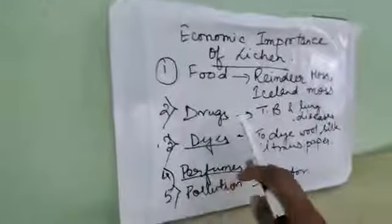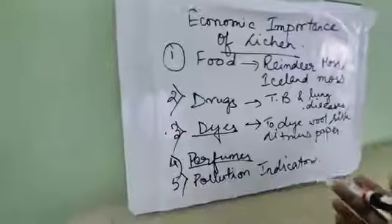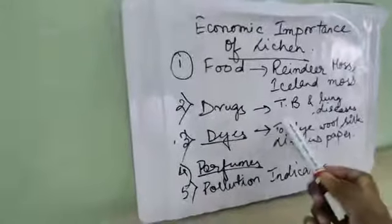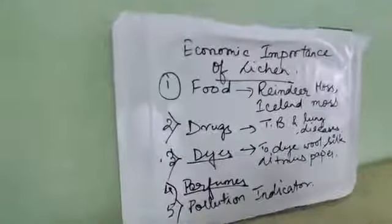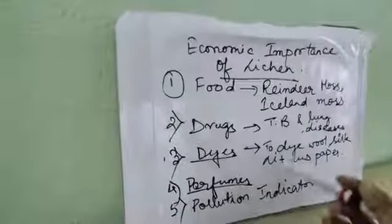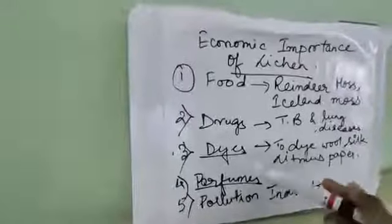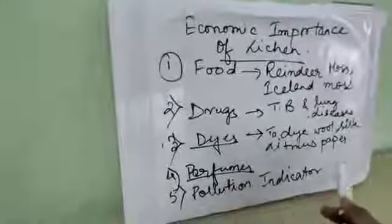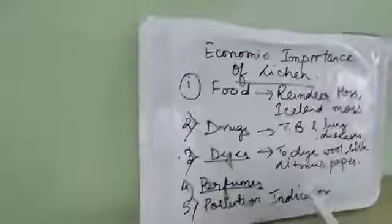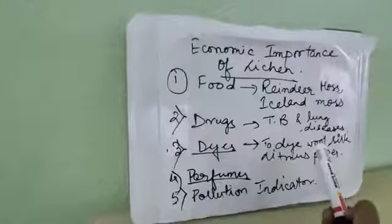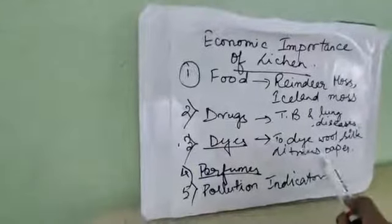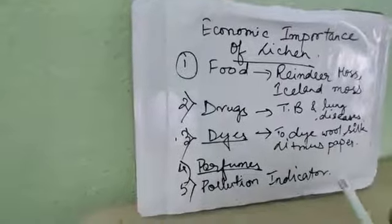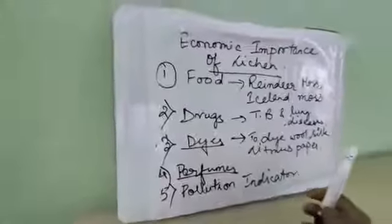Next is drugs or medicine. Different types of drugs and medicines are prepared from different lichens, which are used for various diseases — mainly lung diseases, respiratory diseases, and tuberculosis. Next are dyes: different brown colored dyes are produced from lichen, which are helpful for dyeing wool and silk fibers. Also, the litmus paper we use in laboratory experiments is produced from lichen.